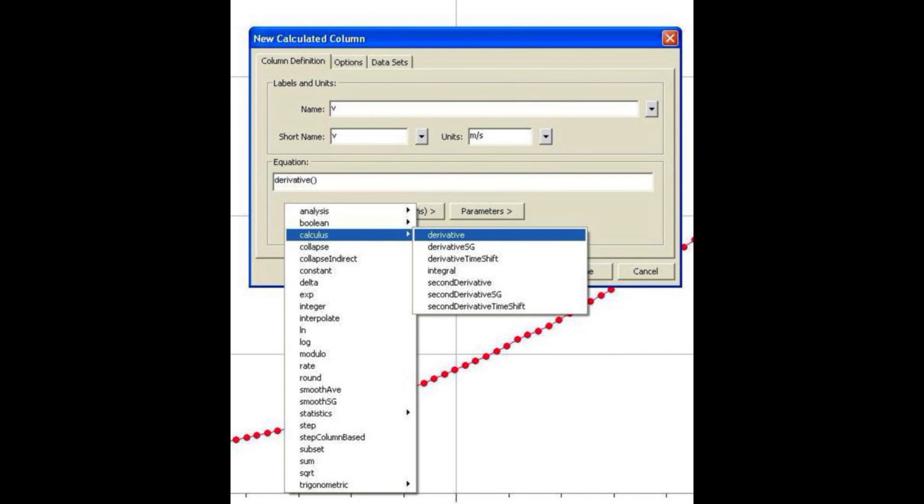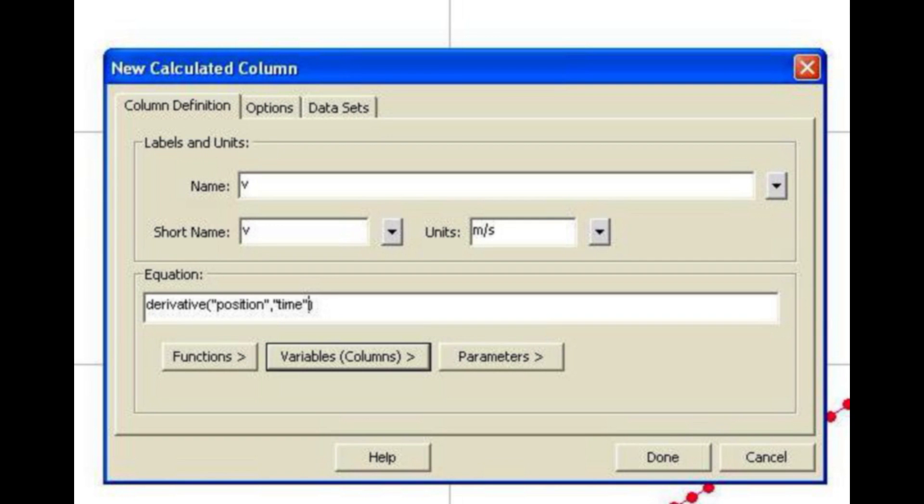We need velocity for the kinetic energy calculations, so begin a new calculated column called V and use the derivative function from the calculus list of functions. The definition needs to be the derivative of position with respect to time.